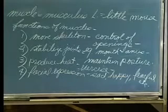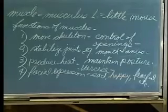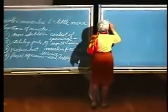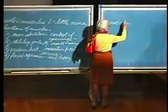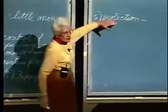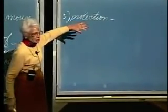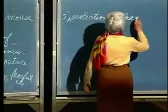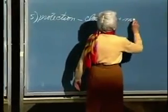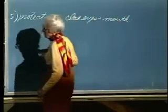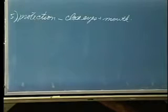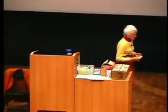So we were mentioning our functions here. And protection — in what way is it protecting? Protecting your eyes, for example. Quickly close them if something foreign is coming. Close your mouth if something foreign is coming. So close eyes and mouth. Anybody think of any other functions for muscles? Have you ever thought about your muscles except when they hurt? What is nomenclature then? How do we name muscles?